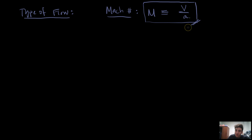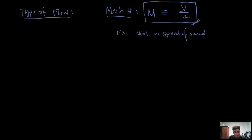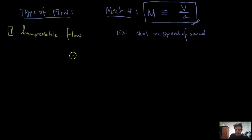The Mach number is an extremely important thing we need. The first type of flow we're going to consider is what is called incompressible flow. An incompressible flow is when our Mach number is less than approximately 0.3. In incompressible flow, the density is a constant — the air density is going to be a constant. Density units are newtons per meter cubed, the amount of force per volume.